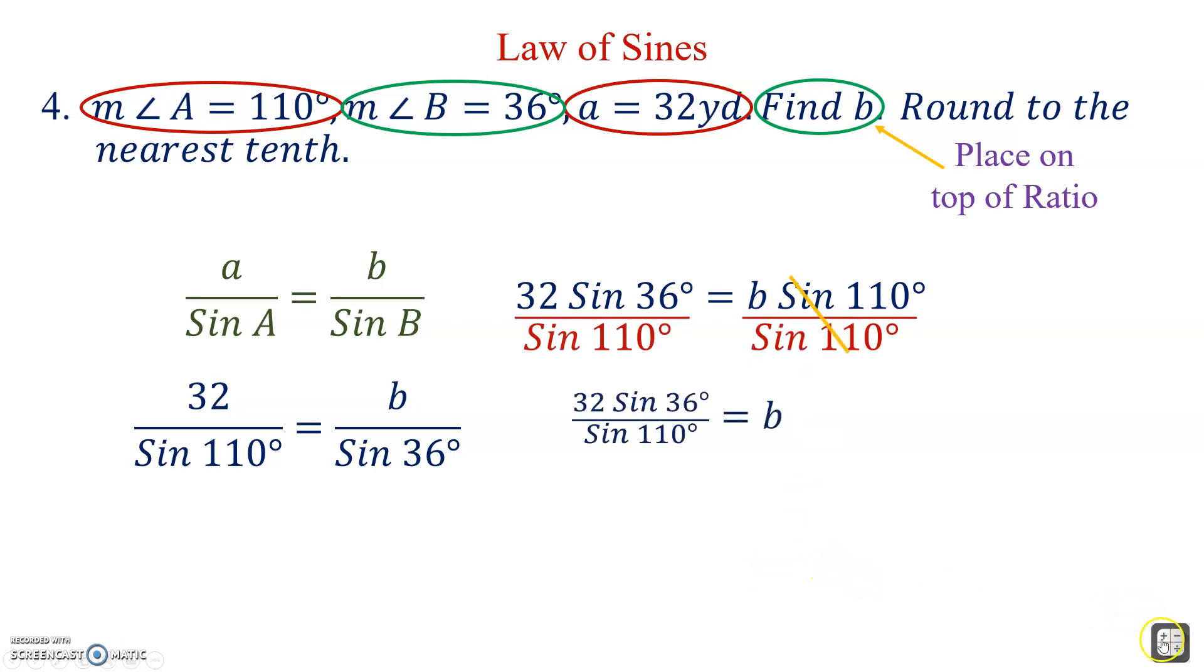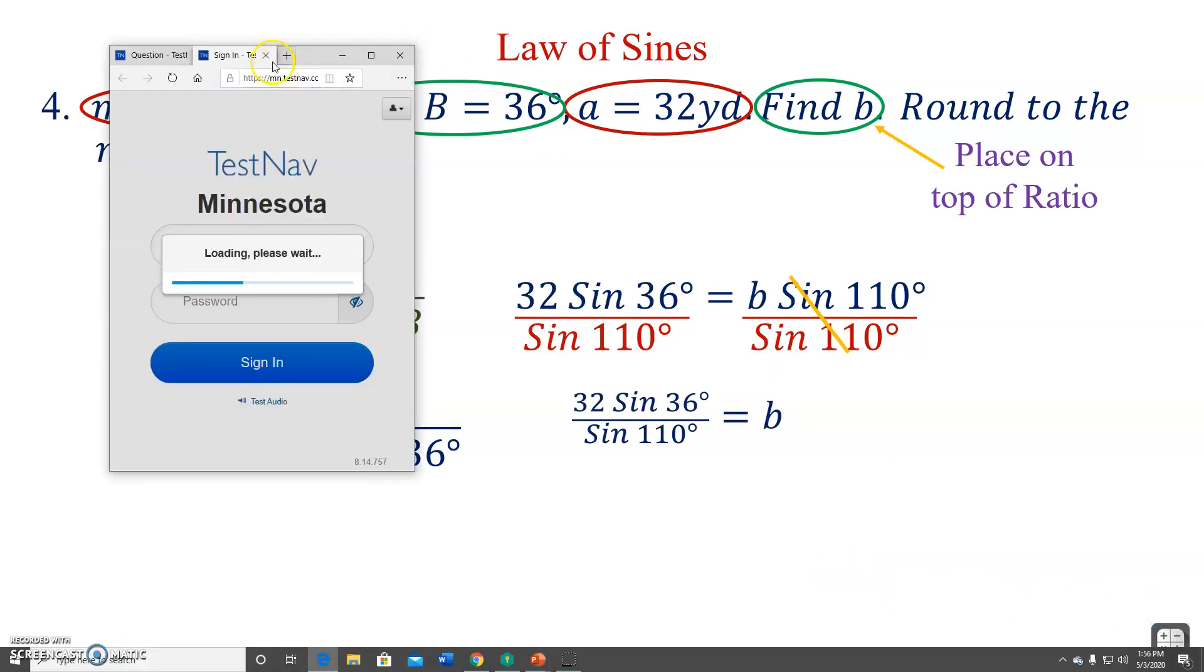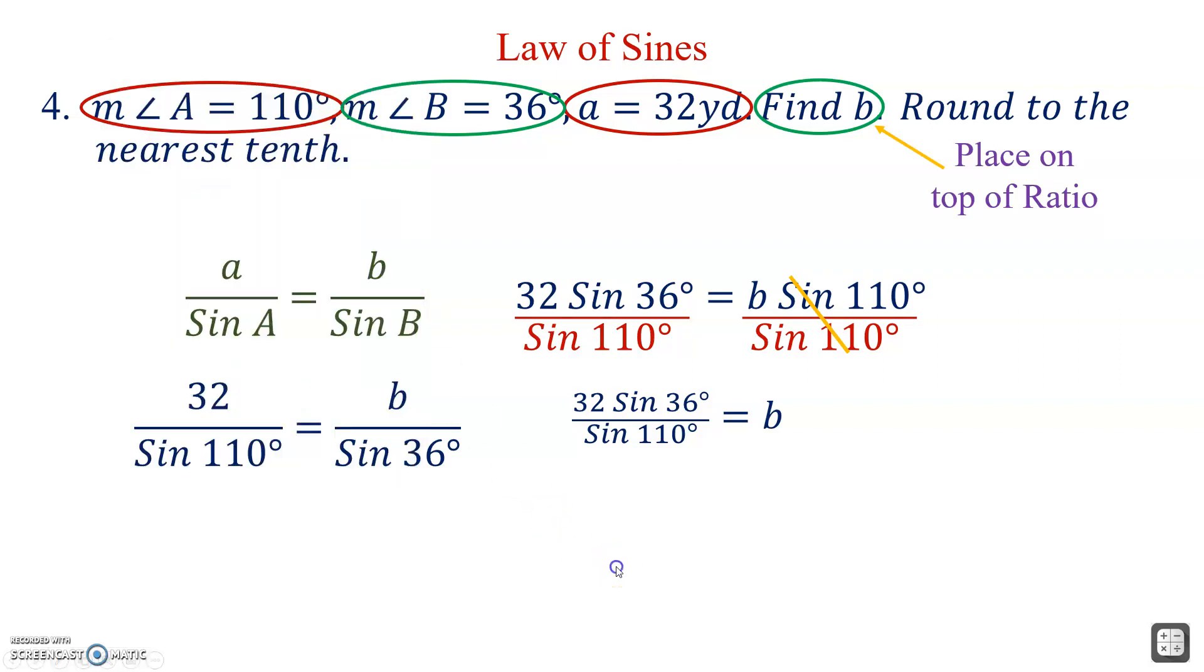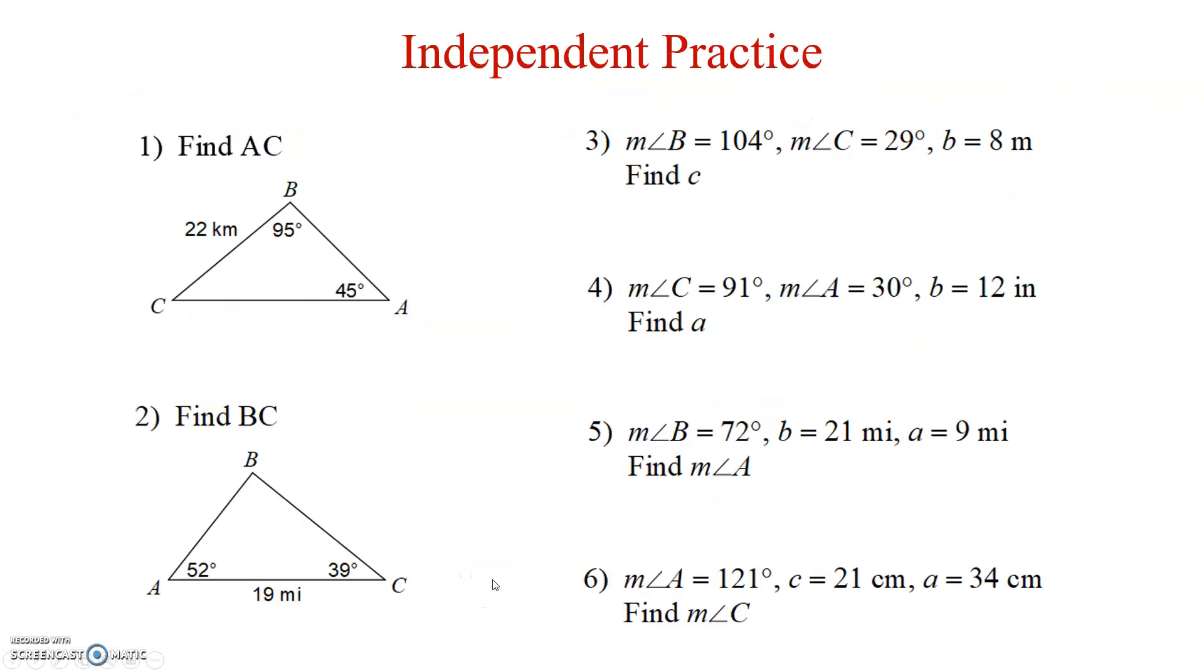This is what's going into the calculator. 32 sine 36. 32 sine 36, all over sine 110. Gives us right about 20. Round to the nearest tenth, 20.0. There we go. These have been guided ones. And these will be the ones that you will complete.